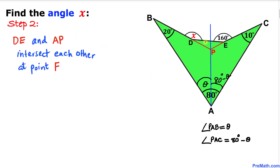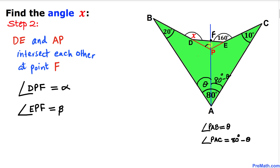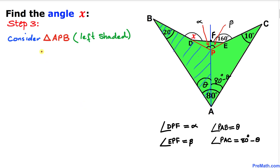We can see that line segment DE and line AP intersect each other. Let's call this intersection point F. Now let's focus on the small triangle DPE — this angle at P has been divided into two smaller angles: angle DPF and angle EPF. I'm going to call angle DPF as angle alpha, and angle EPF as angle beta.